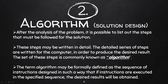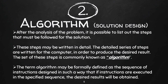These steps must be followed for the solution. You can write them down on paper in detail — I will do this first, then that, then that — like that. The detailed series of steps are written for the computer, because we are dealing with computers and programming. We write those steps in order to produce the desired result. The set of these steps is commonly known as algorithm.